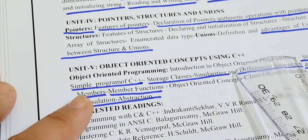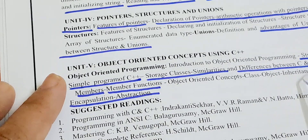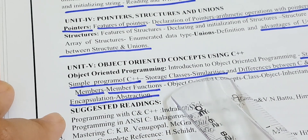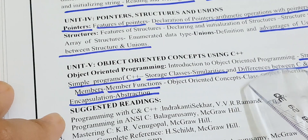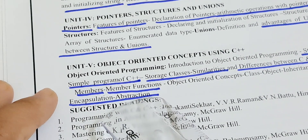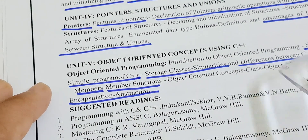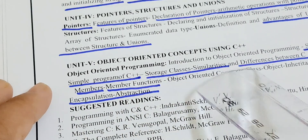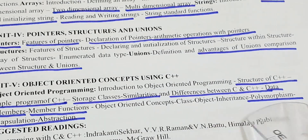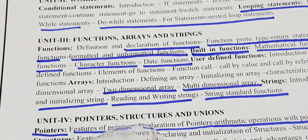In unit five, the very most important question is the structure of C++, a simple program of C++, storage classes, and similarities. Difference between C and C++ is a very most important long-answer question. Data members and member functions are for short answers. Polymorphism, encapsulation, and abstraction are important short topics. Learning all of these will cover both long and short questions.